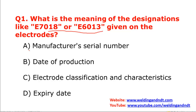Option A is manufacturer serial number, option B is date of production, option C is electrode classification and characteristics, option D is expiry date. Friends, it's nothing but the electrode classification and characteristics.